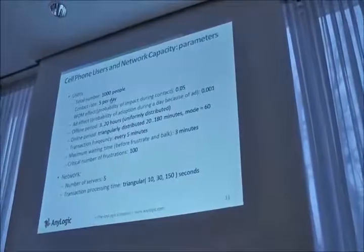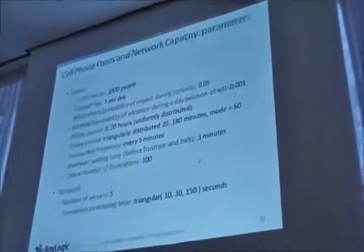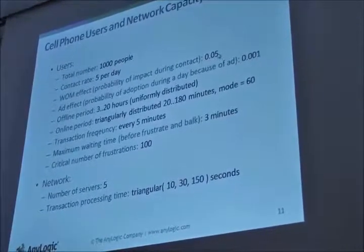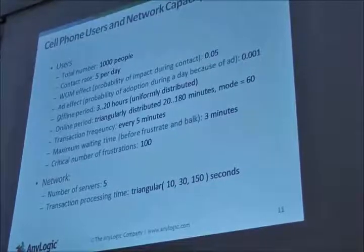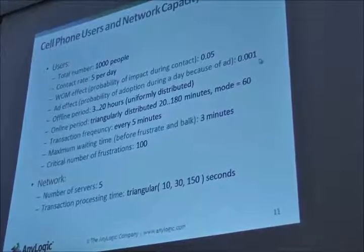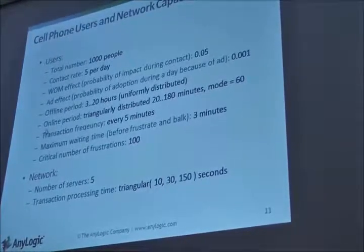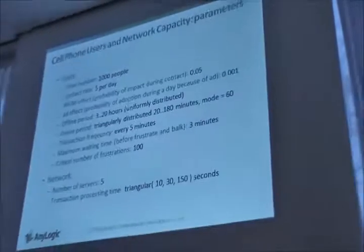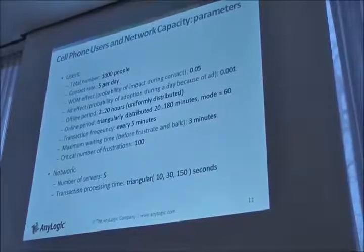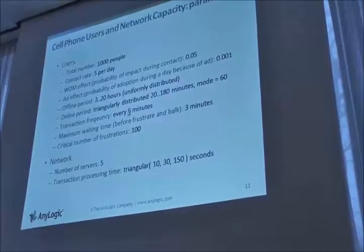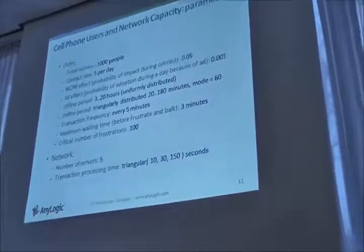Okay, these are some numbers for the model. Let's say a thousand people — people talk to each other, this is the word-of-mouth rate — let's say five contacts per day. Probability of convincing the other person to buy internet during contact: five percent. There's also advertising effectiveness, and this is the usage pattern. Let's say the offline period is this, and the online period — the period of active usage of internet — is that. We will explicitly model every important transaction. We'll assume, for simplicity, that every five minutes there are seven transactions going to the network.